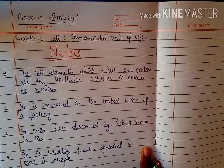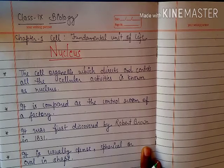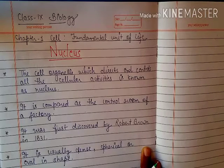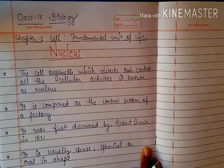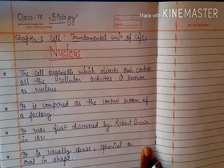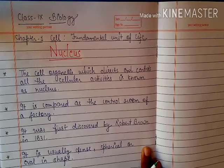Hello students, in this video we are going to discuss the topic nucleus from Chapter 1 of Class 9th Biology - 'Cell: Fundamental Unit of Life.' The cell has lots of different components in its cytoplasm, and there are so many different kinds of cell organelles, among which the biggest cell organelle found in the cell is known as nucleus.